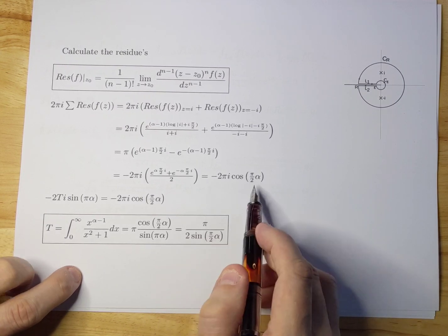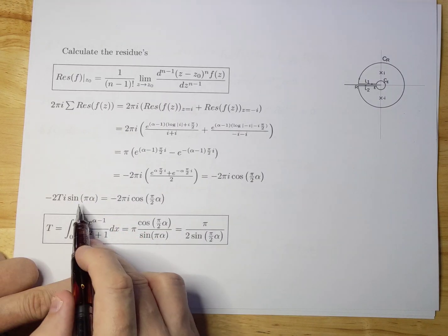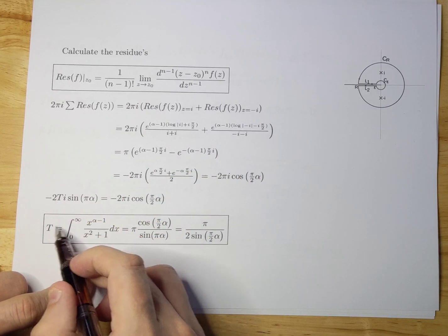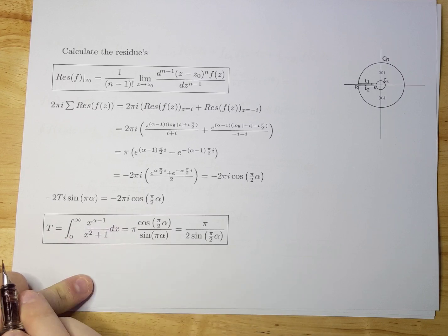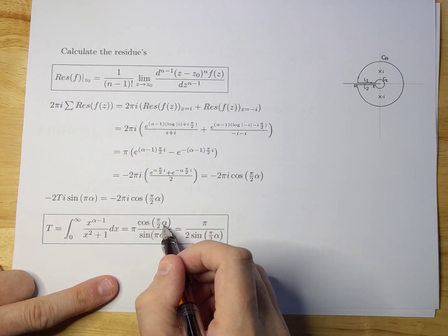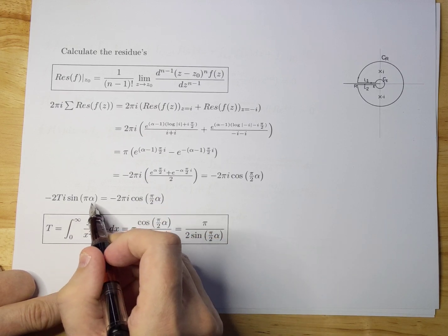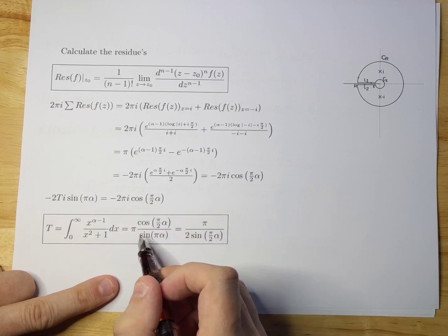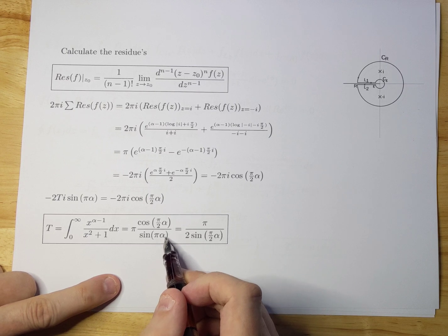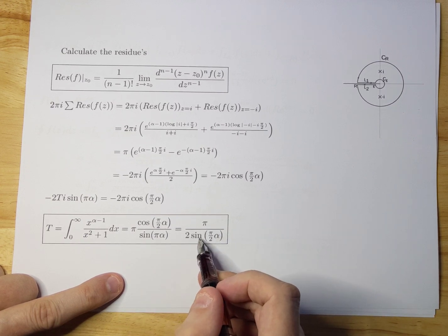Now we match the left-hand side with the residues on the right-hand side. Setting −2Ti·sin(πα) equal to 2πi · (−2 cos(πα/2)) / (2i) and solving for T, we get T = π · cos(πα/2) / sin(πα). Using the double-angle identity sin(πα) = 2·sin(πα/2)·cos(πα/2), we can cancel the cosine terms, leaving T = π / (2·sin(πα/2)).